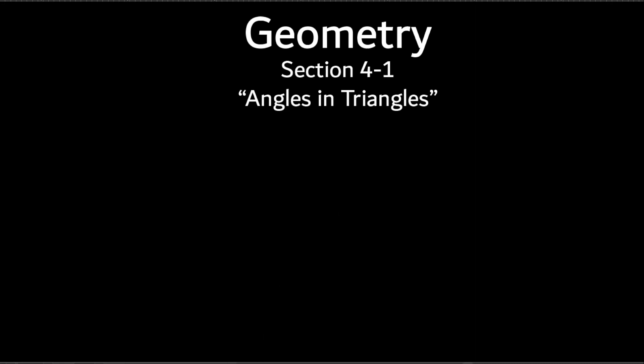We are on chapter four, and as you can see, it says angles and triangles. We're going to talk about five different types of triangles today. We're going to find some missing measurements, missing angles, and solve for X. The rest of geometry, they're going to give you pictures with angles, sides, and X expressions like three X plus one, and you'll need to do some algebra — solve for X and plug it back in.